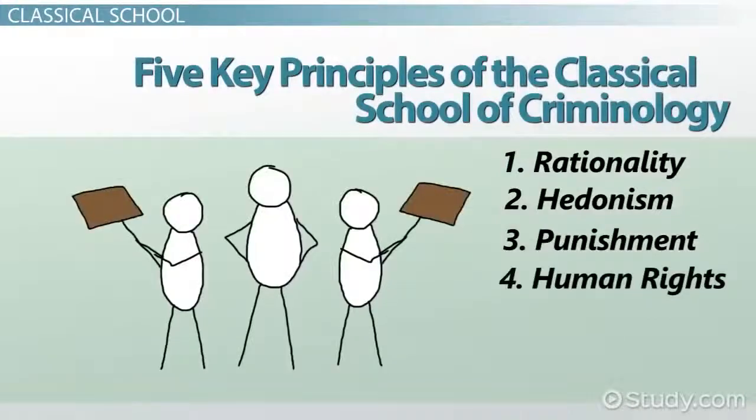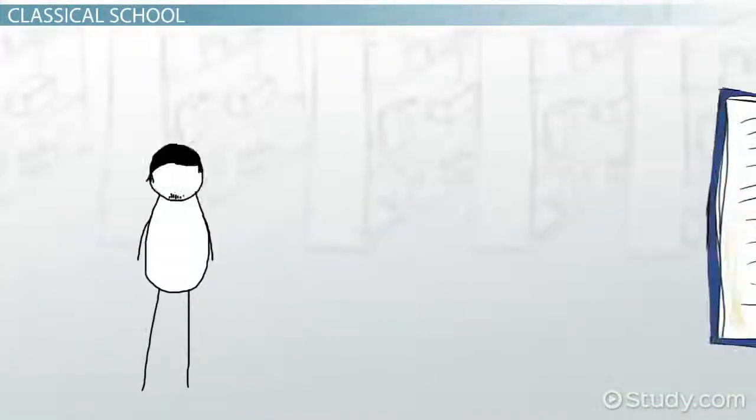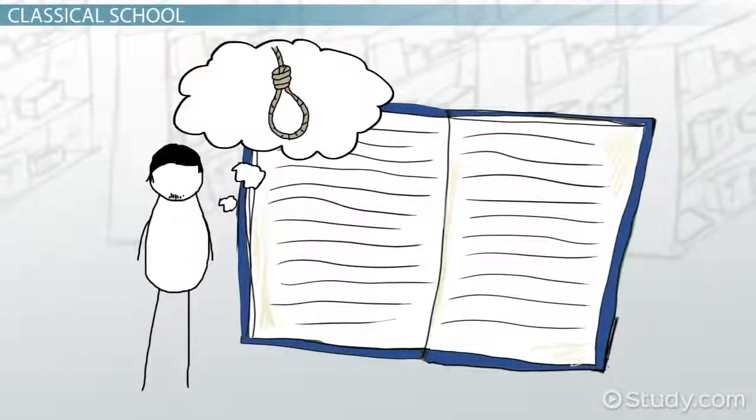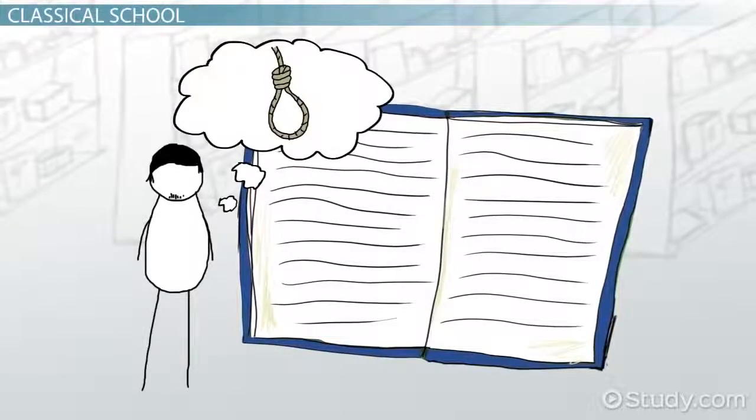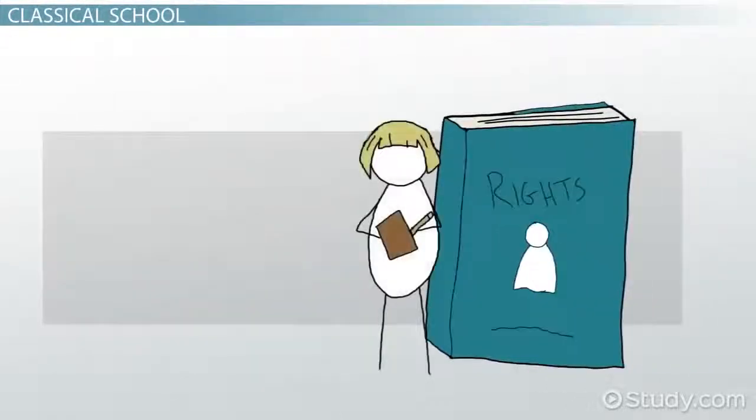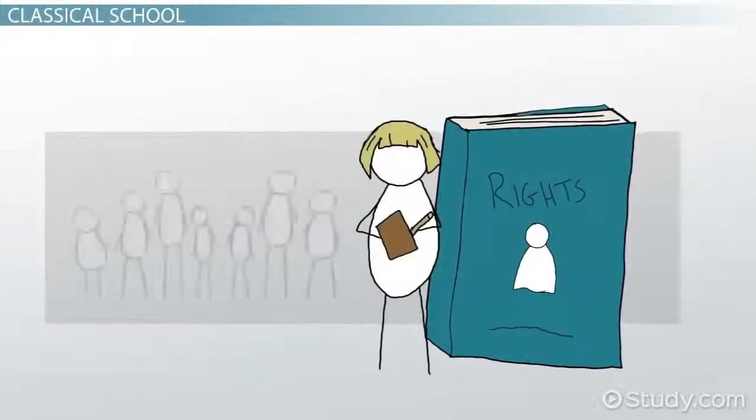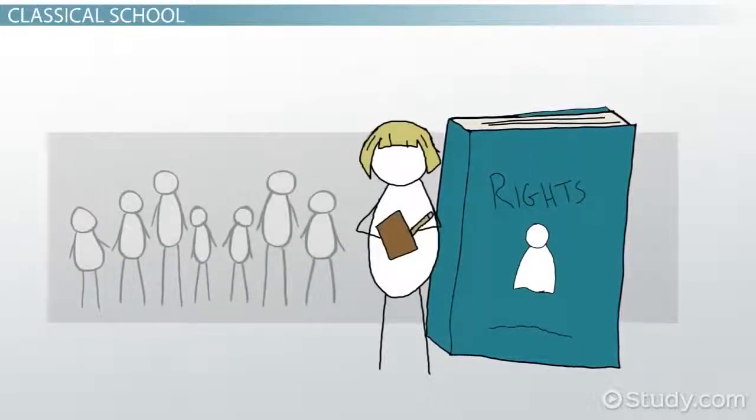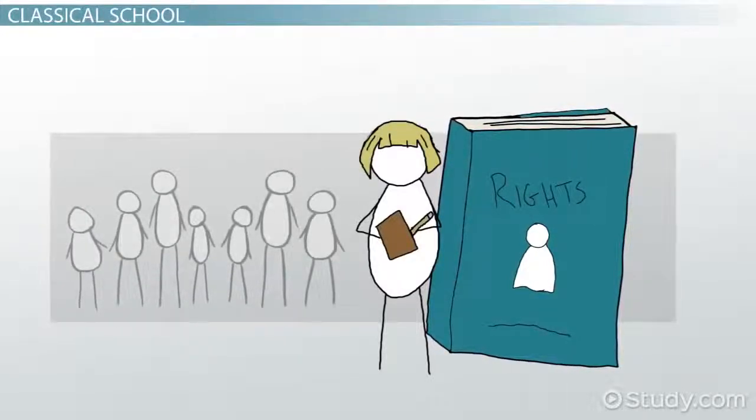Number four, human rights. Jordan has learned that before the Classical School of Criminology, punishments could be very harsh indeed. According to the Classical School of Criminology, all individuals have rights, and society needs to respect the rights of the individuals.